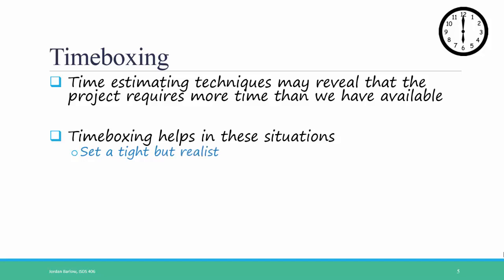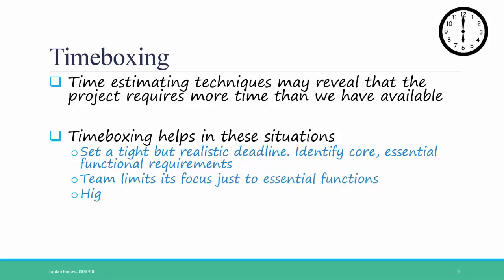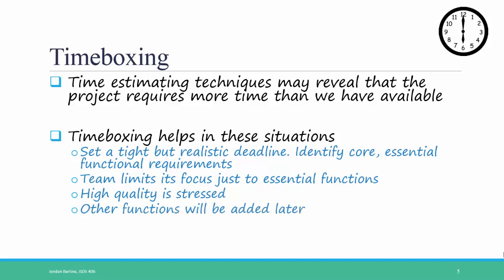First, set a tight but realistic deadline. Then identify core essential functional requirements that must be part of the system. Also identify which requirements are not as essential. Then your project team should limit its focus to just the essential functions of the system. You stress high quality, and then other functions will have to be added later, in another version or iteration. Repeat these steps to add refinements and enhancements.